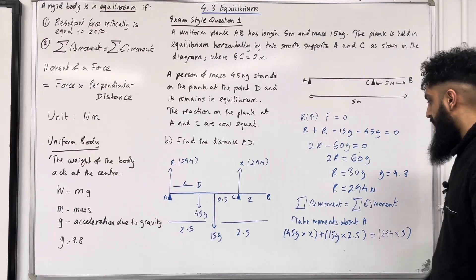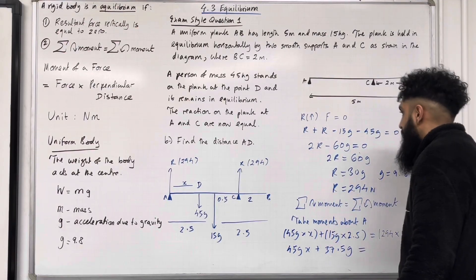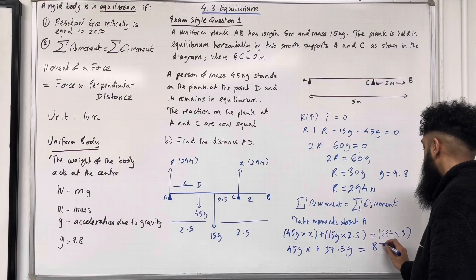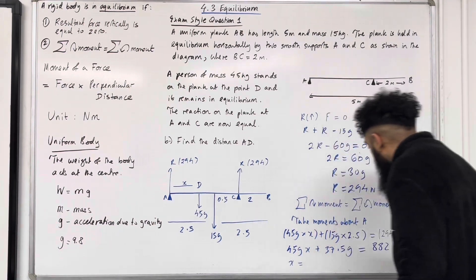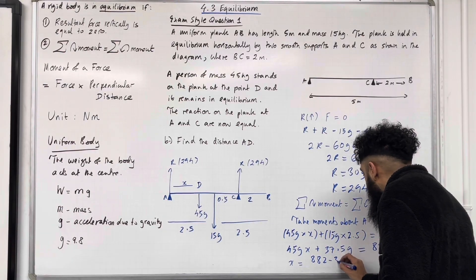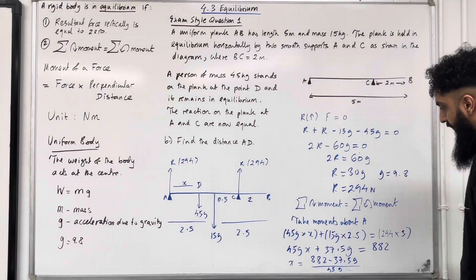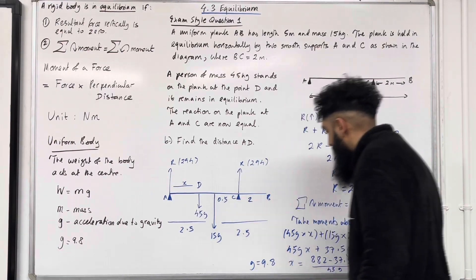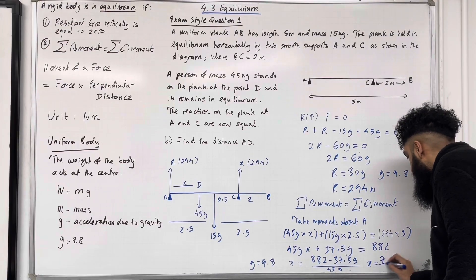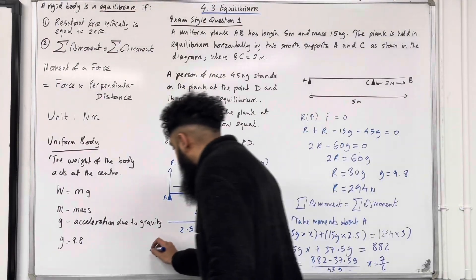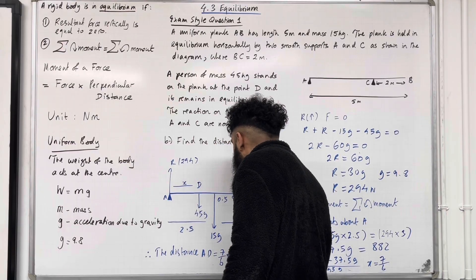Simplifying the equation: 45gX plus 37.5g equals 294 times 3, which is 882. Making X the subject: X equals 882 minus 37.5g all over 45g. Substituting g equals 9.8 gives X equal to 7 over 6. Therefore, the distance A to D equals 7/6 metres. That completes exam style question one.